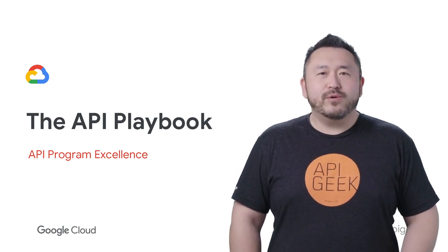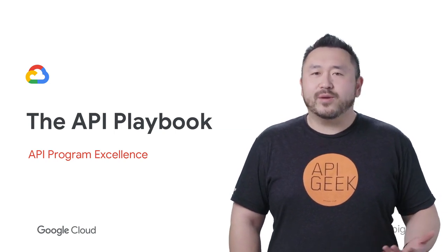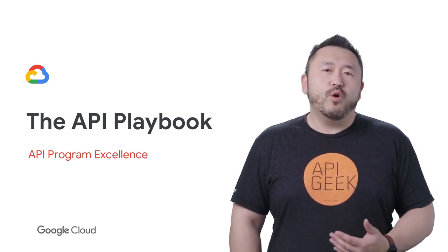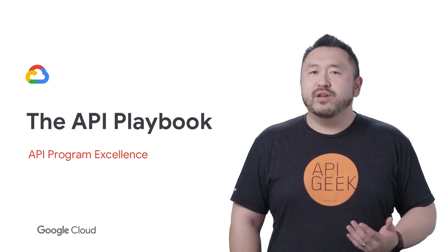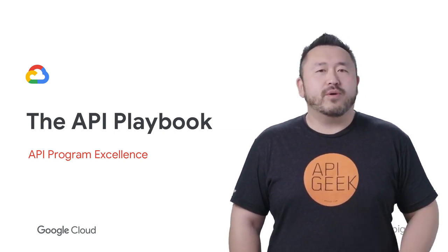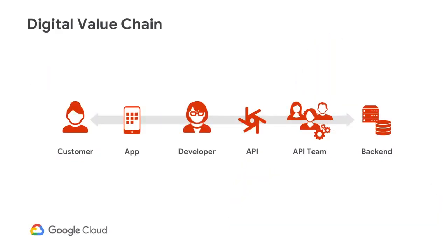The API Playbook is a living document that guides the overall direction of your API program. When we consider the digital value chain, every aspect is an integral part of the API Playbook. For example, how do you ensure your APIs are secure?